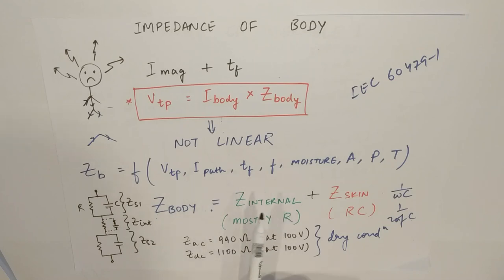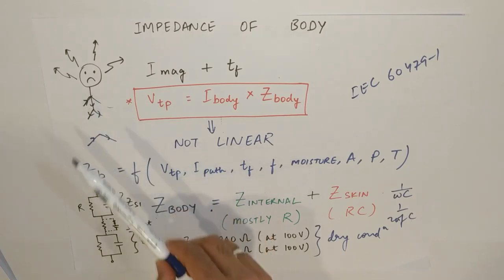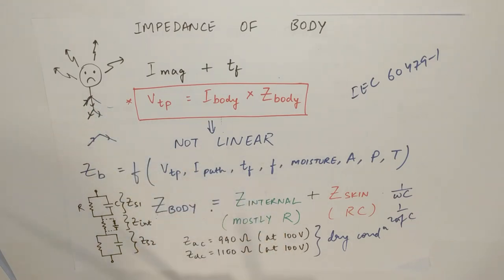Now, this body impedance is divided into two. One is internal. Then the other one is skin. It is the sum of both. Internal is mainly resistive part. And it is mainly due to the flow of current. It is not dependent on other factors. It is only dependent upon the path. Like it is going from hand to hand or from hand to leg, which is mainly the internal impedance. The skin impedance is comprised of both resistance and capacitance. And it is dependent upon the touch voltage, the duration, frequency, moisture, area, pressure, and temperature. Now, as you increase the touch voltage, there is a breakdown in the skin. And the value of skin impedance falls. It goes considerably low, making this body impedance only dependent upon the internal impedance.